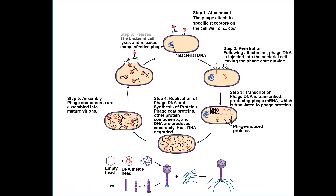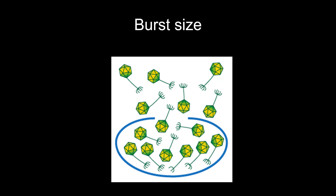Burst size is how many viruses get released when the host cell ruptures. This differs between different species of bacteria and viruses. Micrococcus is a much smaller cell than E. coli, so the burst size is smaller for Micrococcus — it just depends on the size of the cell.